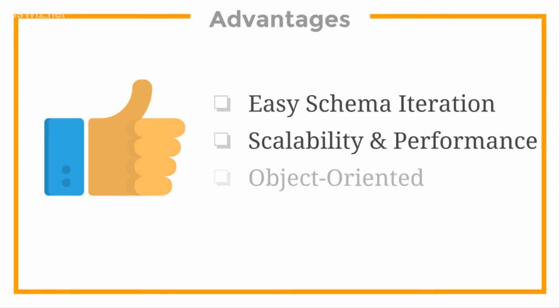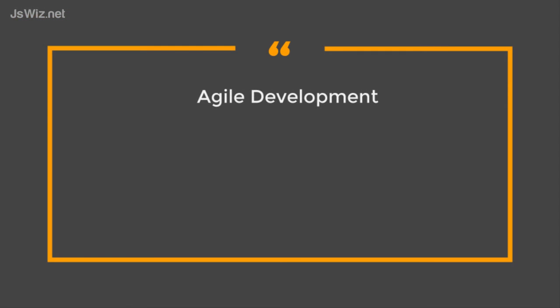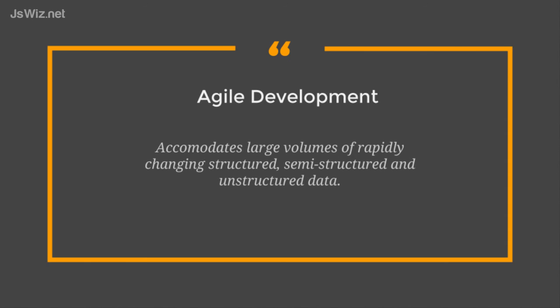It's object-oriented, so the administration of adding, reading, and writing looks very similar to JavaScript code. Agile development is the ability to quickly iterate. Per the MongoDB website, the NoSQL database accommodates large volumes of rapidly changing structured, semi-structured, and unstructured data.